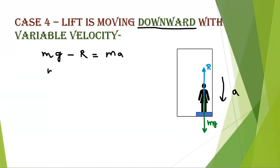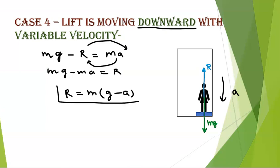Again, you will have to calculate apparent weight R. So you will shift R on right side and MA on left side. What will you get? Mg minus MA equals R. And R equals in simplified form M times (G minus A). So what does it mean? Apparent weight of body will be lesser.